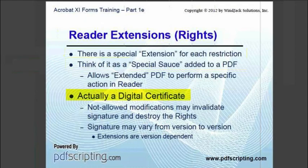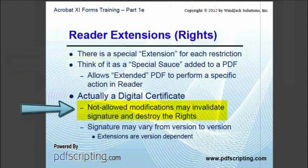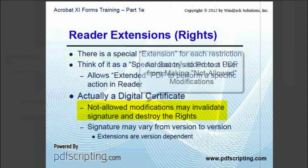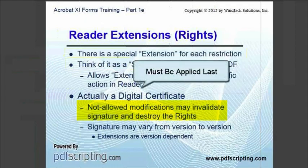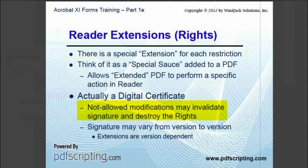The way this works is that the write or extension is really a digital certificate. If the digital certificate is invalidated, the PDF loses the write, and it is actually quite easy to invalidate a certificate. For example, performing a not-allowed modification to a PDF — something the PDF does not have a right to do. Both Acrobat and Reader protect the user from this by turning off any feature that could cause a problem. When you open an extended PDF in Acrobat, many tools will be disabled because using them would invalidate the write. Writes have to be the last thing added to the PDF before it is distributed.